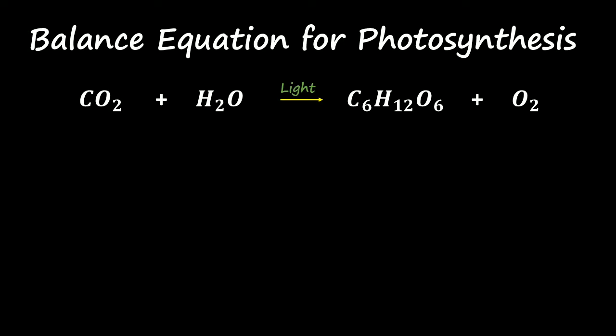...to make glucose, which is C6H12O6, right, and also have oxygen as a byproduct. And we need light in that process. So now that we have kind of our base reaction, all we need to do is kind of just balance the number of atoms that we have.